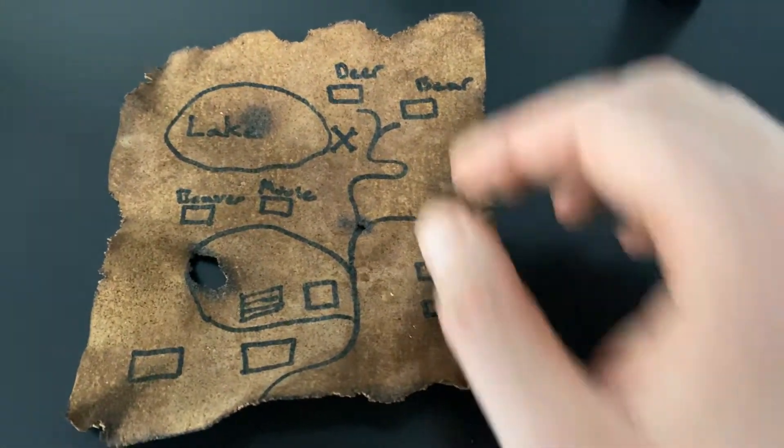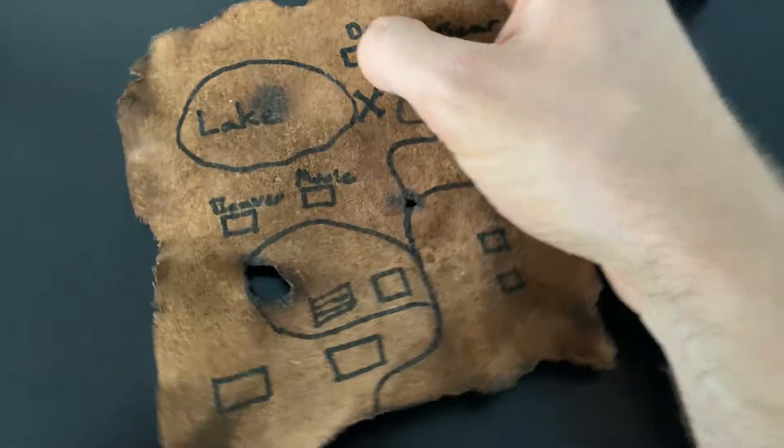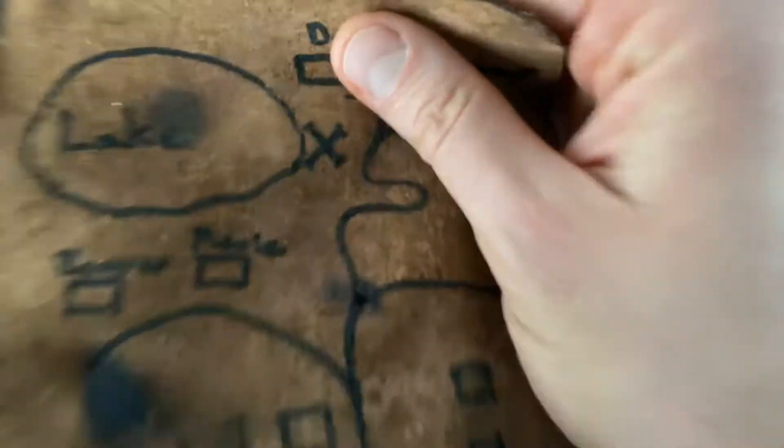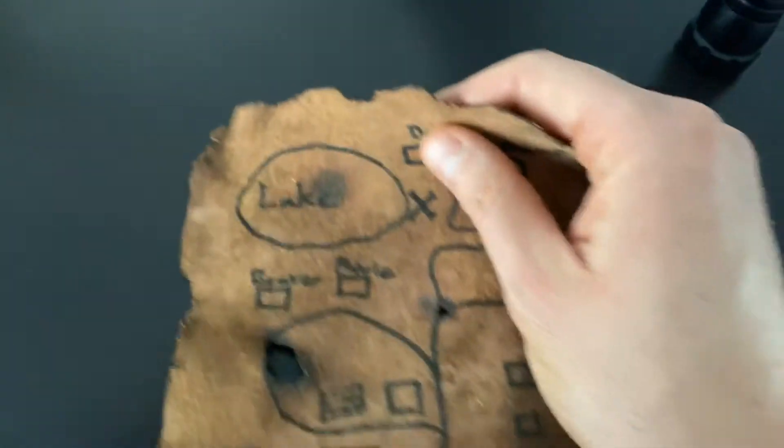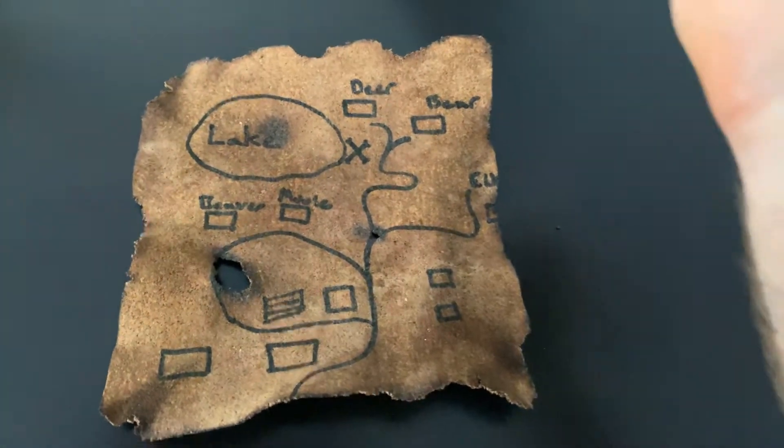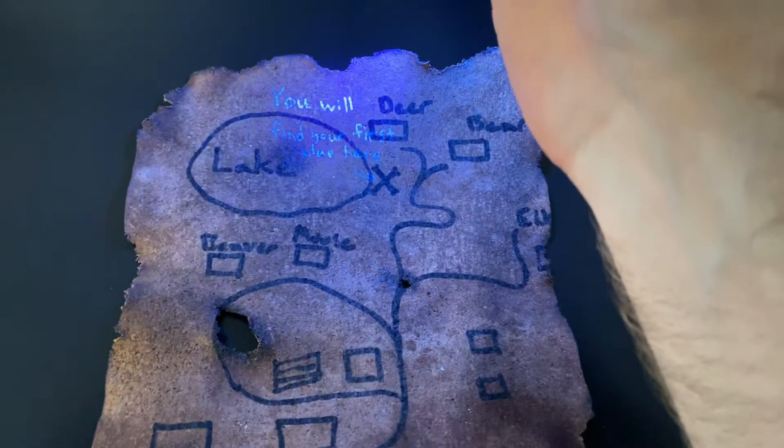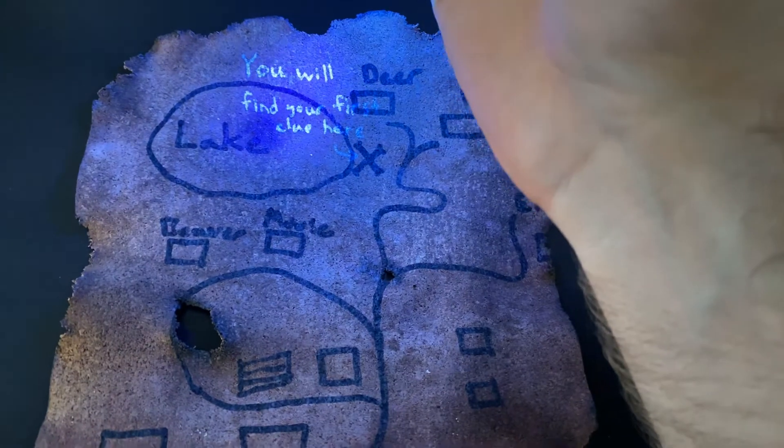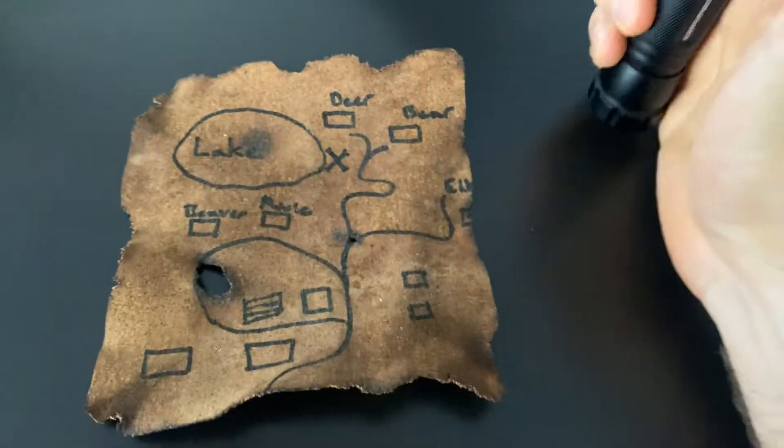What's also really cool is that we've actually written on this map with invisible ink. If you look, you can't tell that it's on there until you put a UV light on it. And then you can actually read it, which is pretty cool.